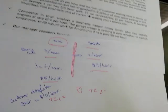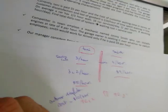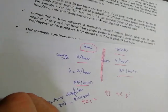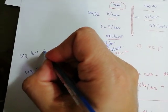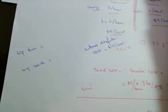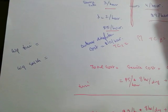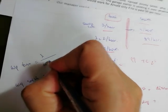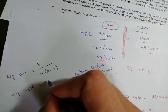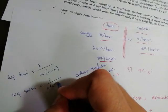For the customer dissatisfaction cost, we need to calculate WQ in both cases—WQ for Tony and WQ for Smith. WQ has an equation: lambda over mu times (mu minus lambda). For Smith, the same equation.